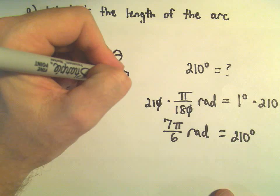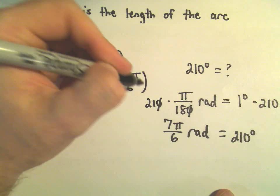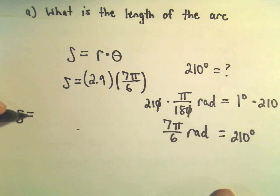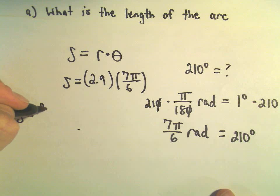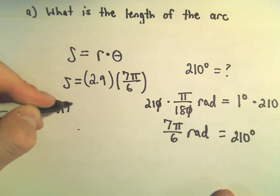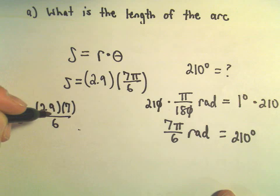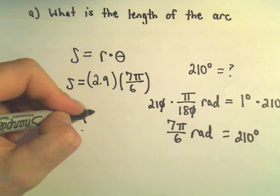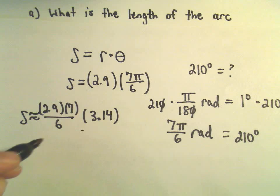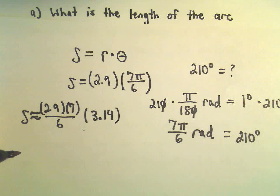So now we'll just plug that in for our theta, and I'm just going to do the same thing as before. So we've got 2.9 times 7 over 6, and let me make my little curvy equal sign, so this is now approximately equal to, I'll write the pi as 3.14.